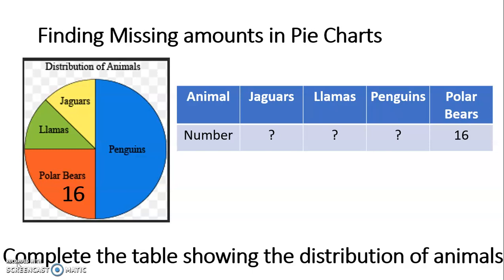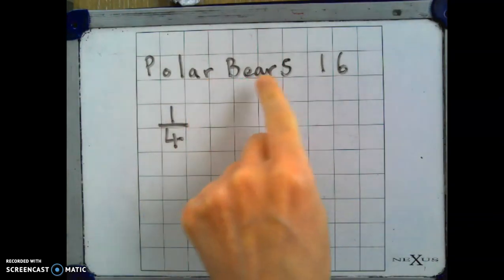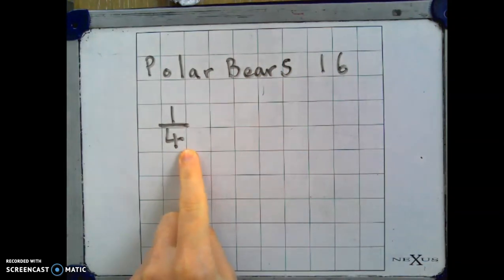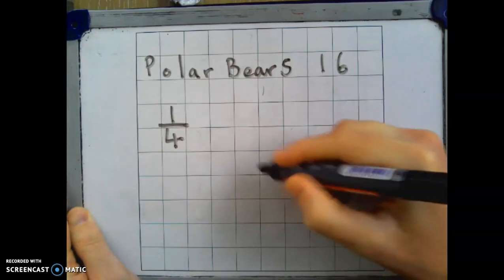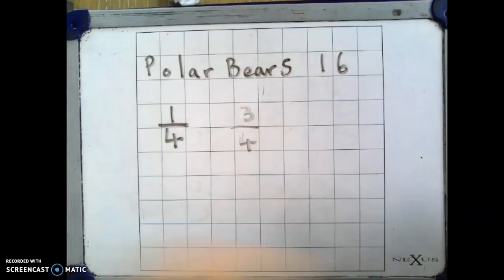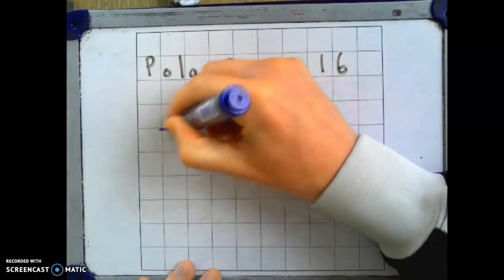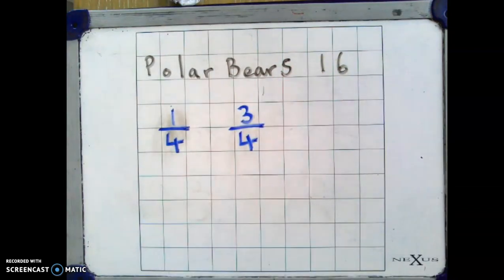Right, so let's swap to our visualiser, and we can talk through calculating each of those amounts of animals. Right, so as you can see, I've jotted down that information that we know. Polar bears, there are 16 of them, and that is one quarter of the total amount. So we know that one quarter of the total amount are polar bears, but we don't know what the other three quarters are. So we need to find the remaining three quarters.